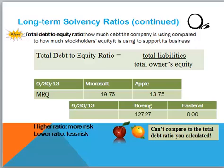Another long-term solvency ratio — not in your book — is the debt-to-equity ratio. This measures how much debt the company is using compared to the shareholders' equity. We take total liabilities divided by total owner's equity. I got these ratios from Reuters, calculated for the most recent quarter. We see Microsoft at 19.76 and Apple at 13.75. My calculations based on the balance sheets are different, but you can use this as a relative gauge of leverage. Consistent with our calculations, Microsoft is more leveraged than Apple.